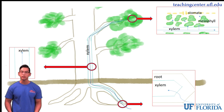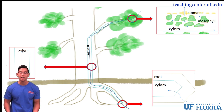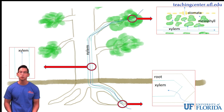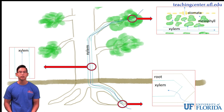The water in our air spaces can now exit through the stomata. We can visually see how water enters through the roots and exits through the stomata of the leaves, and cohesion allows for water molecules to stick together and travel together in a single column, kind of like a rope.